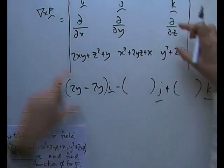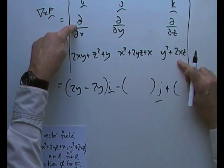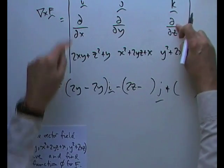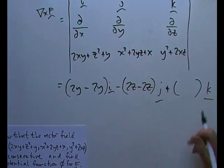Middle one for j, the minor is going to be this. The partial of that with respect to x is just 2z. The partial of this with respect to z, only this term here is 2z, so far so good.